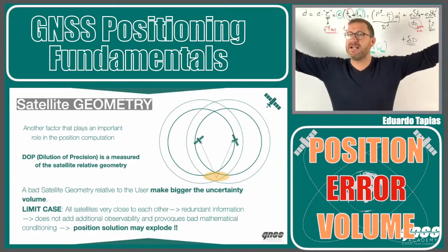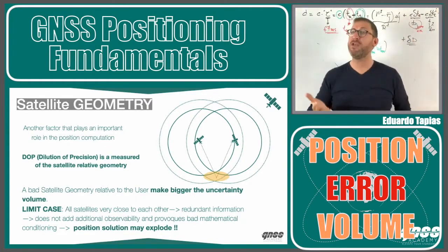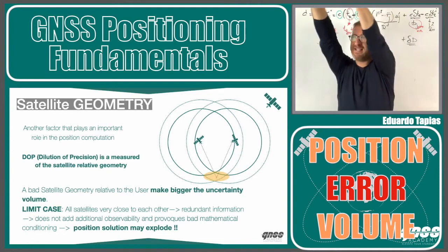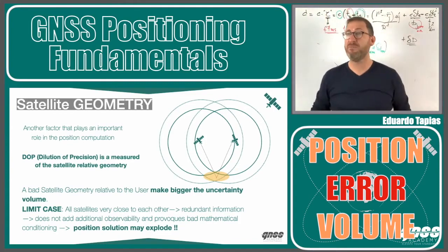Let's imagine that we have satellites that are really close to each other. Do you think that this equation will be independent? From the mathematical point of view, if I have two satellites in the same point, this will be more or less the same equation.